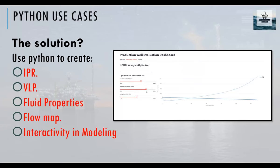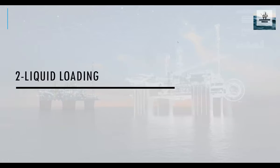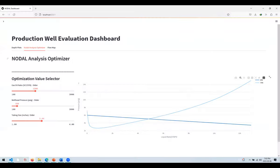You can create the IPR, the VLP, the fluid properties, the flow maps, and even create interactivity while designing your well. Let me show you the solution I've built. This is built in only under 200 lines of code — you can imagine all the features added in just 200 lines.